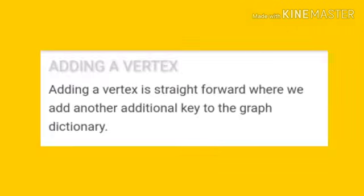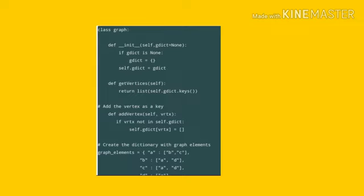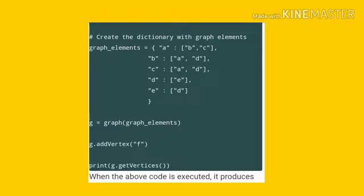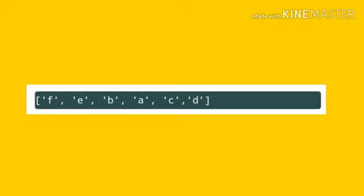Adding a vertex. Adding a vertex is straightforward where we add another additional key to the graph dictionary. Class graph. Add the vertex as a key. Create a dictionary with the graph elements. Here is the code. When the above code is executed, it produces the following result.